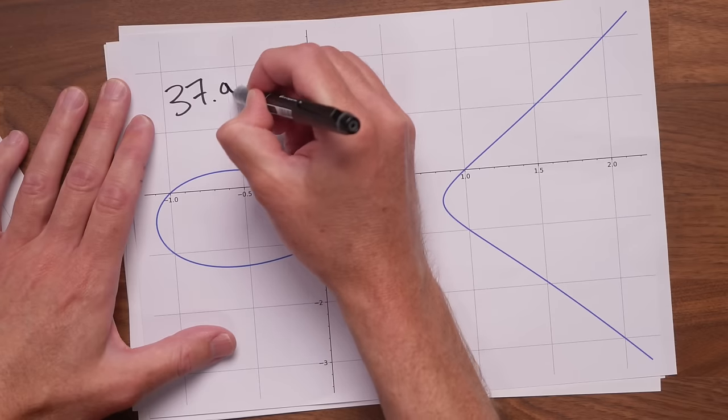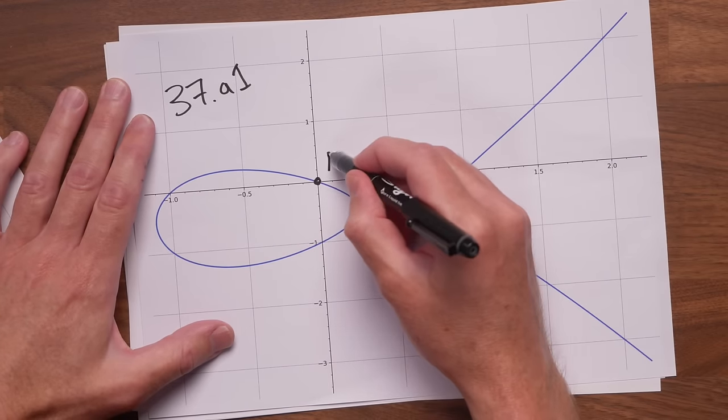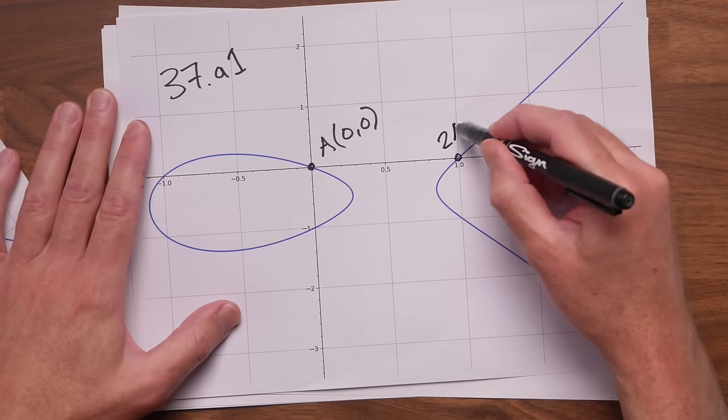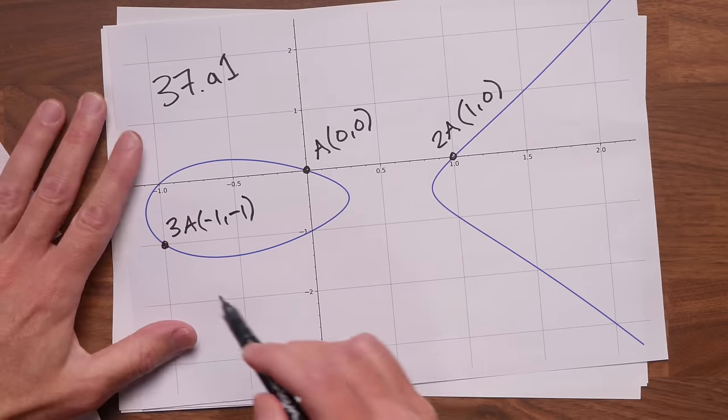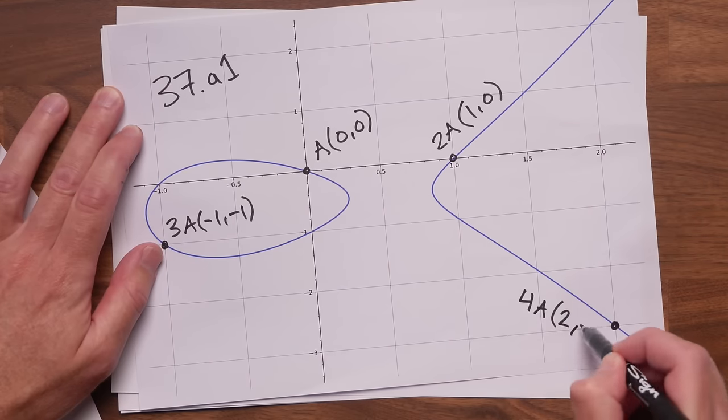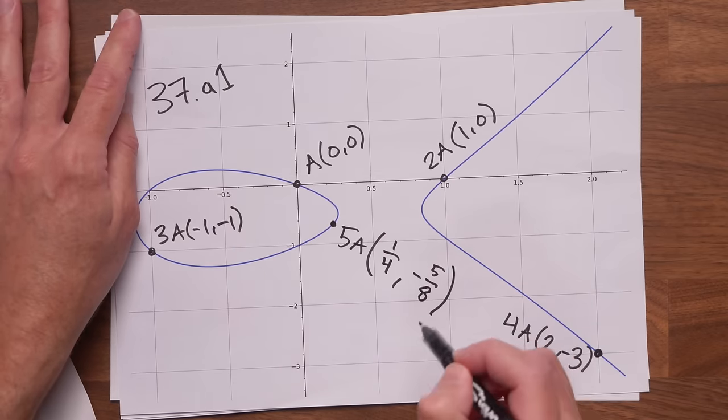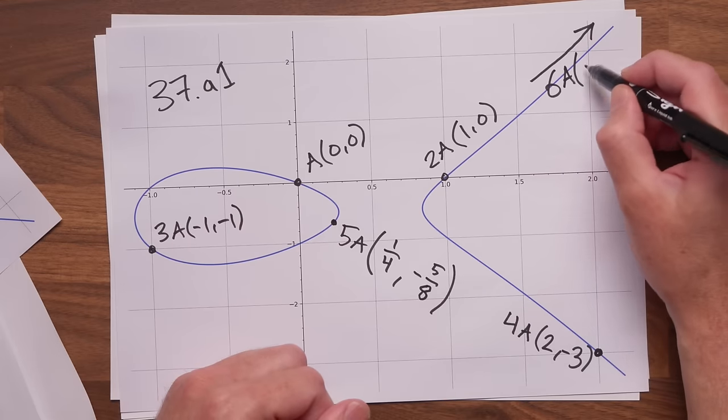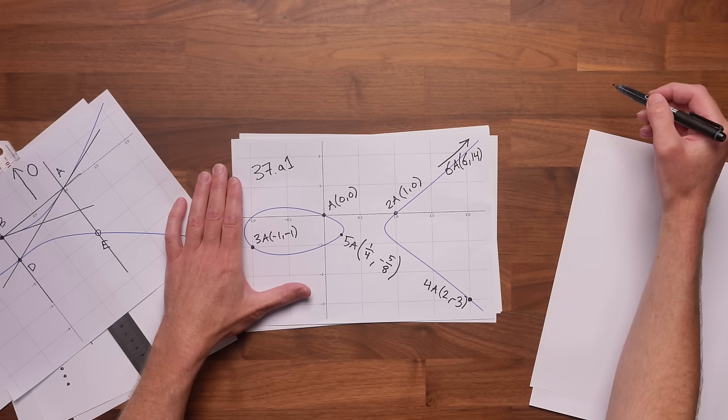Let's take another curve, 37.A1, and start with the point, the origin. Call it A. Now, 2A is 1, 0. 3A is minus 1, minus 1. 4A is 2, minus 3. 5A now is 1, 4th and minus 5 over 8. We saw that one in the last episode. Finally, 6A is far outside this page. It will be 6, 14. And that one we also saw last time.